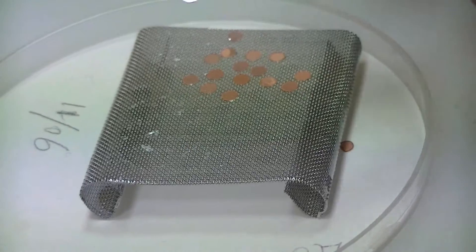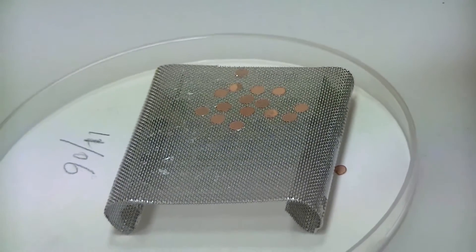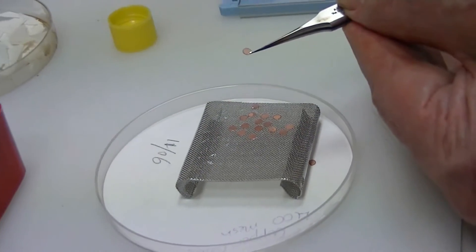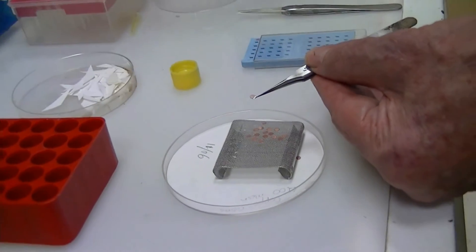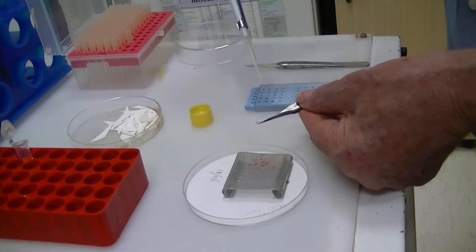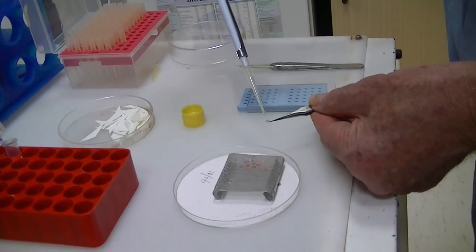So we pick it up from here and then we can apply the specimen directly to it using a normal micropipette tip. We apply the drop directly onto the grid like so.